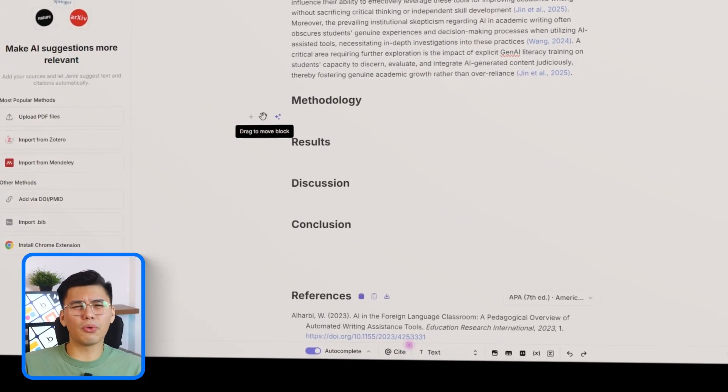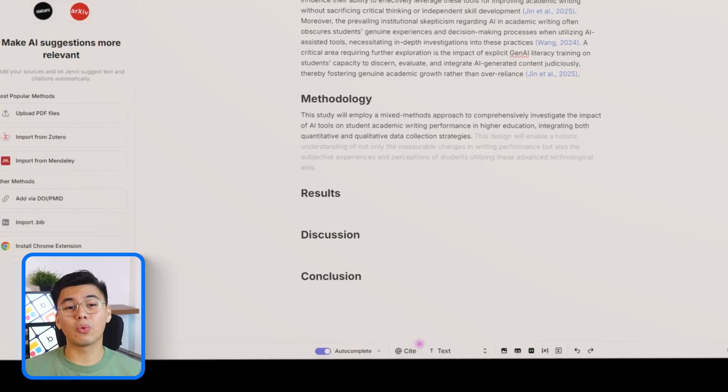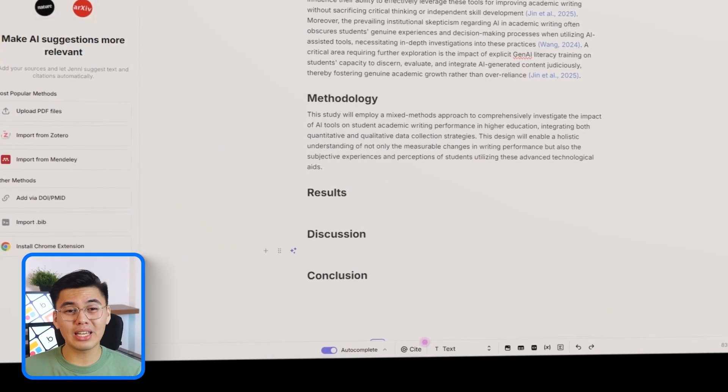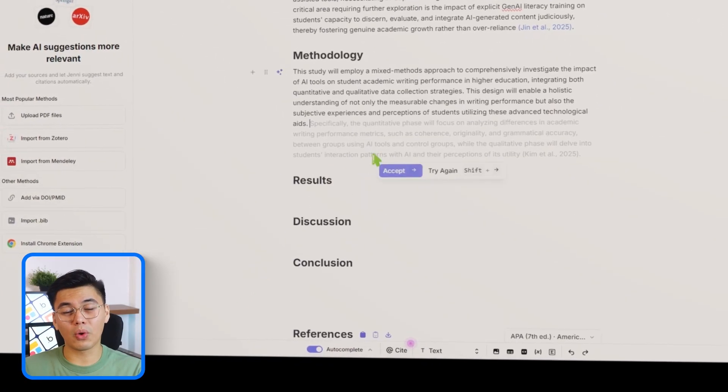The tool starts building out coherent, academically structured sentences on its own, which is a great reminder that you can use it for step-by-step writing too, not just big, fully automated drafts. It's a quick demonstration of how helpful Jenny can be, even in a normal writing workflow.